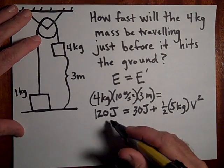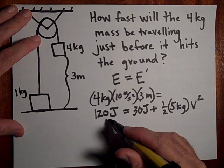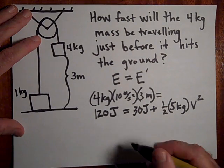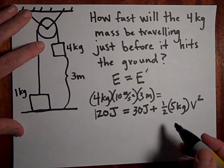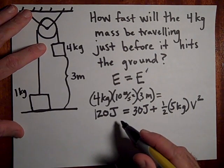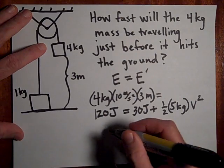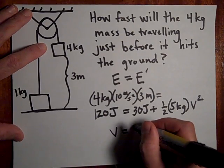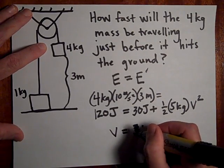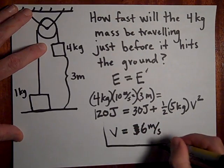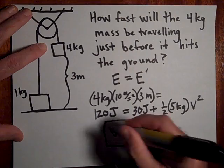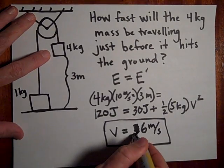So if I, this is going to give me 90 if I bring the 30 on the other side. And then, 90 is, let's say 90 times 2 is 180 divided by 5 is 36. So I'm getting a speed of 30, of, excuse me, 6 meters per second. Is that what you got? 6 meters per second.